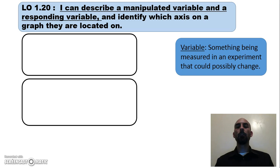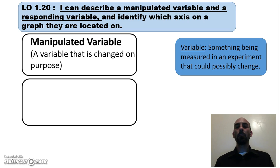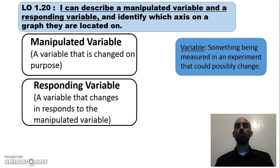Let's move on to the next learning objective: describing a manipulated variable and a responding variable. A variable is something being measured in an experiment that could possibly change. The manipulated variable is one that the researcher changes on purpose. The responding variable changes in response to the manipulated variable.